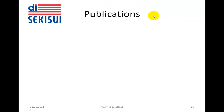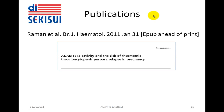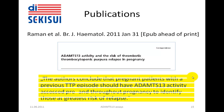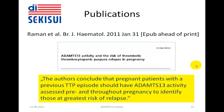We have compiled some recent publications on ADAMS-13 in TTP, as well as publications in which the role of ADAMS-13 has been explored in other diseases and indications. First, a publication by Rahman and colleagues in 2011, entitled 'ADAMS-13 Activity and the Risk of Thrombotic Thrombocytopenic Purpura Relapse in Pregnancy.' The authors conclude that pregnant patients with a previous TTP episode should have ADAMS-13 activity assessed before and during pregnancy to identify those women at greatest risk for relapse of TTP.